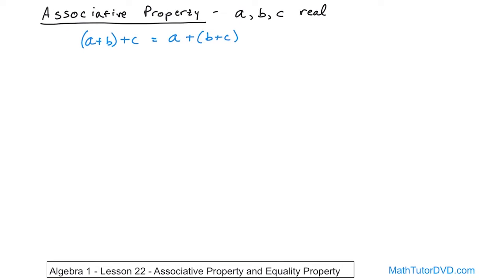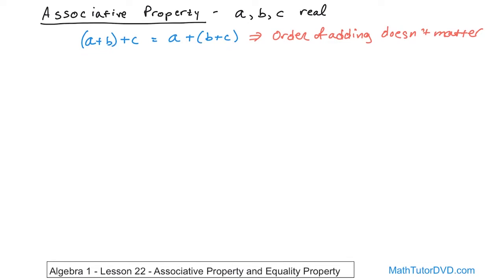The associative property is basically saying that the order of adding three numbers does not matter. In the last section we talked about the commutative property where A plus B equals B plus A — the order didn't matter. The associative property is just extending that to three numbers, and the parentheses are the way to force which two we add first.